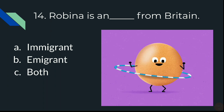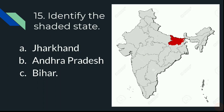Question 15 — the last question of this quiz: Identify the shaded state. There is a state in the image which is shaded in red color. You are supposed to identify it. The options are A) Jharkhand, B) Andhra Pradesh, or C) Bihar.